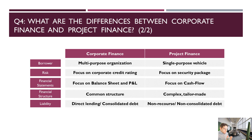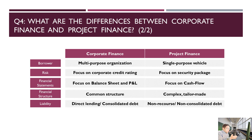The first difference is the borrower. In corporate finance, the borrower is a company that could be multi-purpose. Let's say a company has two lines of business and is looking to develop a third. It will borrow money to finance that expansion, and when it's time to repay, it can repay from whatever cash flows it generates — from the first or second line of business. It truly doesn't matter.